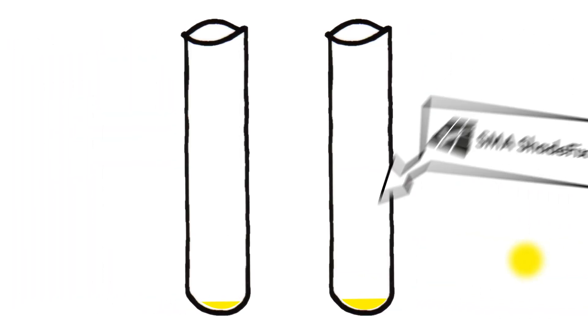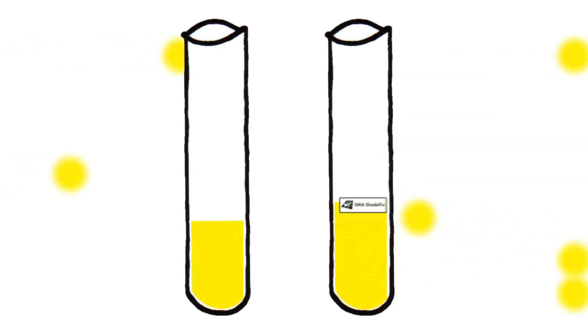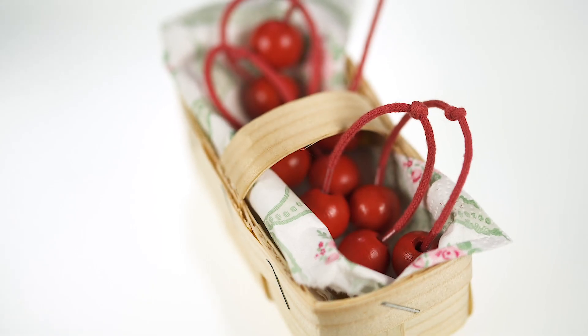With SMA ShadeFix, you get maximum solar yields even in partially shaded plants. And all of this without adding any extra equipment. Peter's cherry tree is no longer in danger of being cut down.